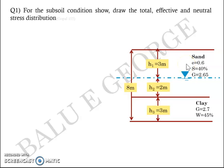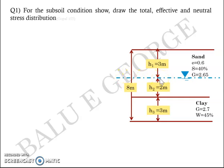The sand has a void ratio of 0.6, degree of saturation S = 0.4 (40%), and specific gravity G = 2.65. The clay layer has a specific gravity of 2.7 and water content of 45% (0.45). The groundwater table is at 3 meters below the ground level. Above the water table, we use the bulk unit weight of sand; below it, we use the saturated unit weight.